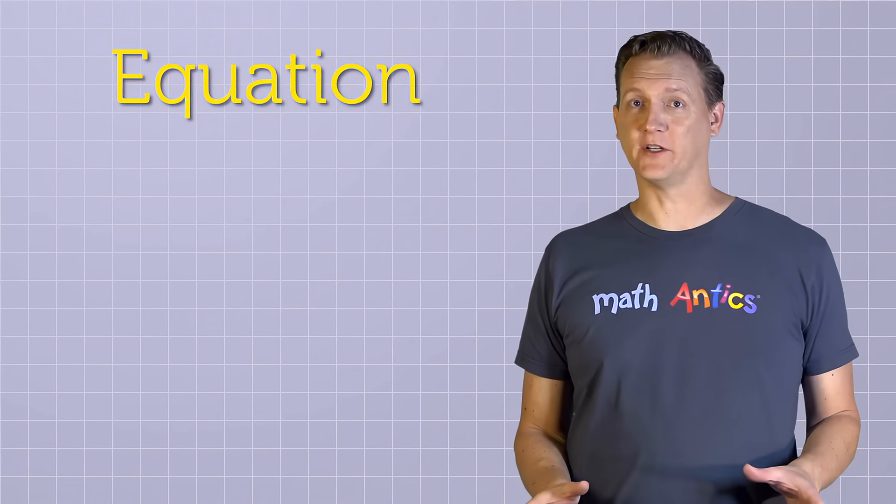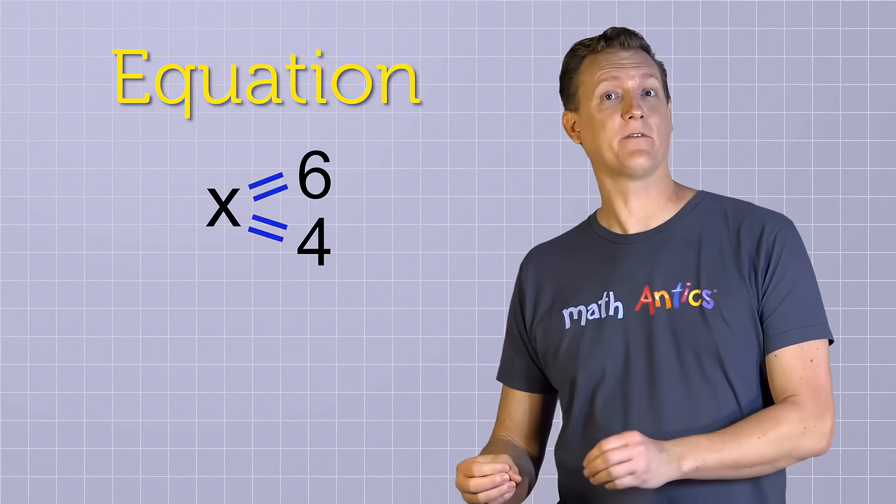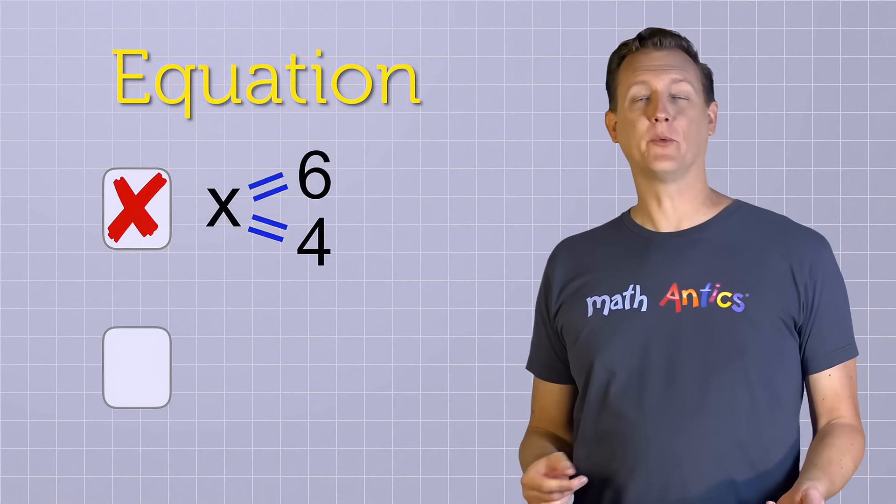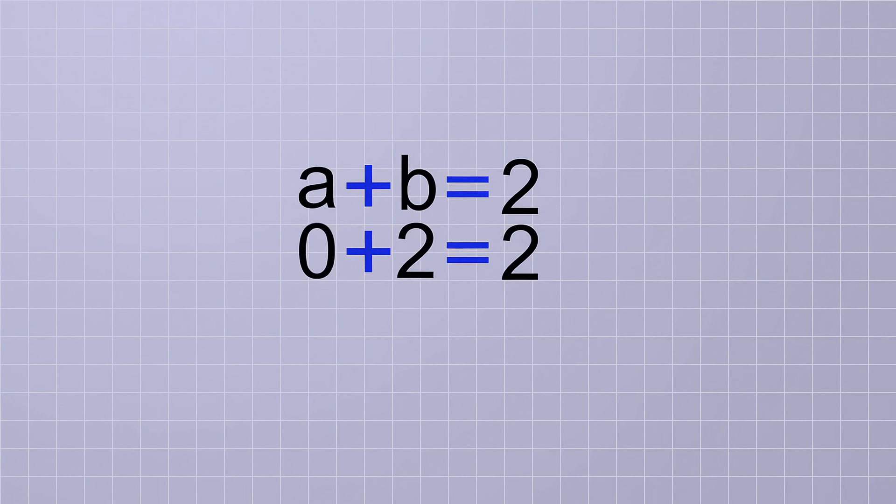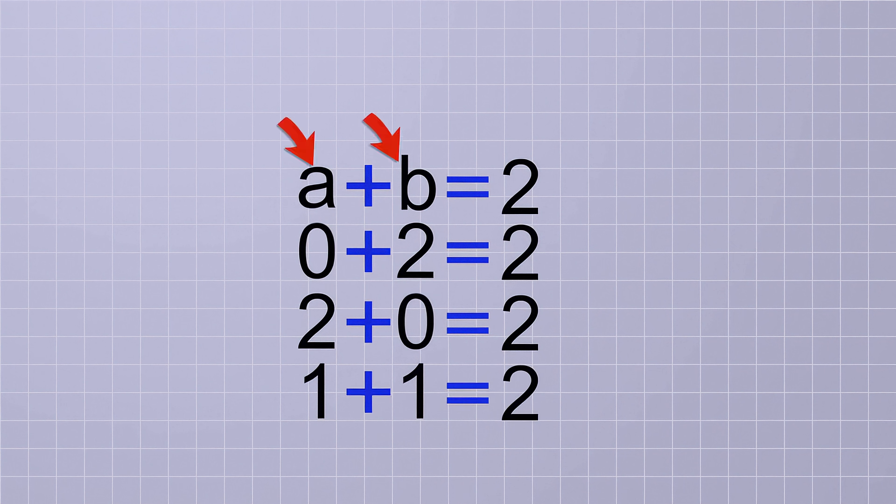Okay, so for any particular equation, we can't use the same letter to represent two different numbers at the same time. But what about the other way around? Could we use two different letters to represent the same number? Yes, and here's an example of that. Let's say you have the equation a plus b equals 2. What could a and b stand for so that the equation is true? Well, if a was 0 and b was 2, then the equation would be true. Or we could switch them around. If a was 2 and b was 0, the equation would also be true. But there's another possibility. If a was 1 and b was also 1, that would make the equation true, right? So even though a and b are different symbols, and would usually be used to represent different numbers, there are times when they might happen to represent the same number.